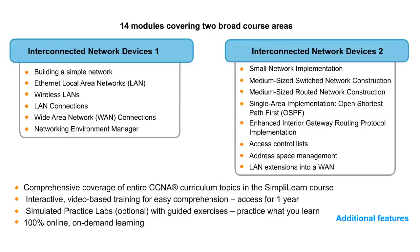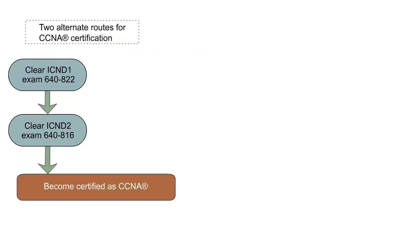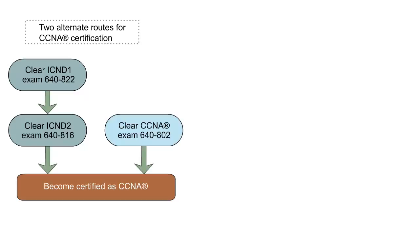There are two ways you can become a CCNA. The first path involves clearing exam 640-822 for ICND1, followed by exam 640-816 for ICND2. This route is usually taken by people who are new to networking and would like to take a slower pace of preparation. The second path involves taking exam 640-822 directly to get the CCNA credential.